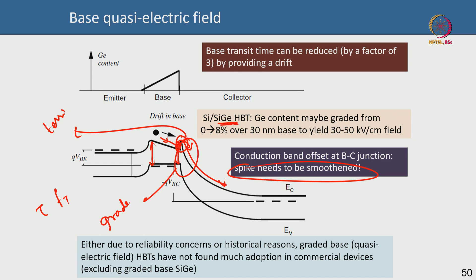In a silicon germanium HBT, the germanium composition is increased from the emitter side to the collector side across the base, giving an extra field of a few tens of kV/cm when germanium composition changes from 0 to 8%, for example. In compound semiconductor HBTs the graded base has not been widely adopted in commercial devices, though military or strategic applications may still use it. In SiGe HBT this grading significantly improves performance, whereas compound semiconductor HBTs can already be very fast without it.